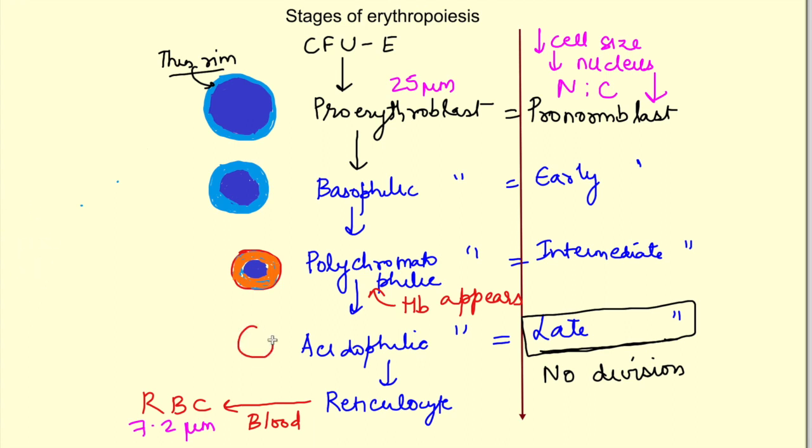The next is late normoblast and this is basically acidophilic because in this stage the nucleus is expelled out and the hemoglobin almost fills the cell completely. This cell does not have the capacity to multiply.